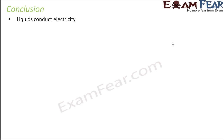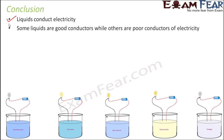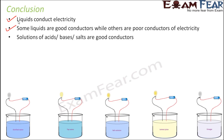So based on this, we found that liquids do conduct electricity. Some liquids are good conductors, while others are poor conductors of electricity. Here you can see all the liquids we have discussed. With distilled water, the bulb did not glow. With vinegar, the bulb did not glow almost. With tap water, the bulb was dim. But with salt solution and lemon juice, the bulb was glowing quite bright. So what do we conclude? We conclude that mostly solutions of acids, bases, and salts are generally good conductors of electricity.